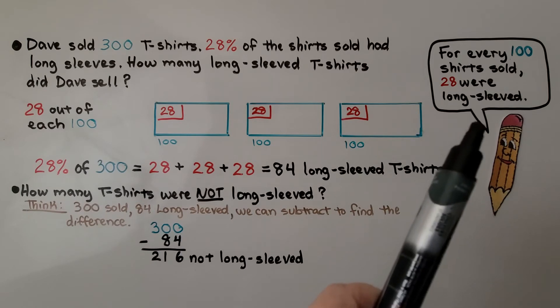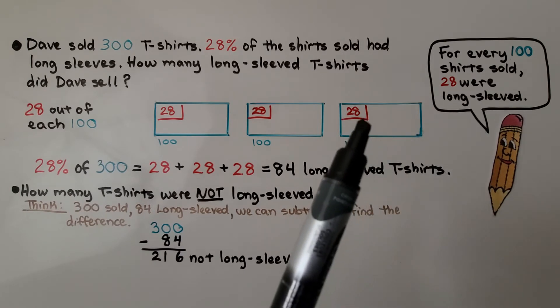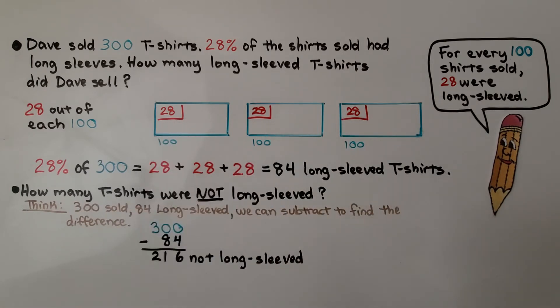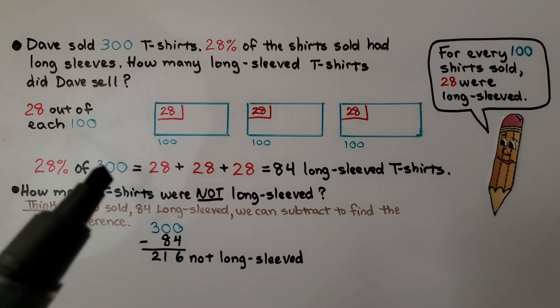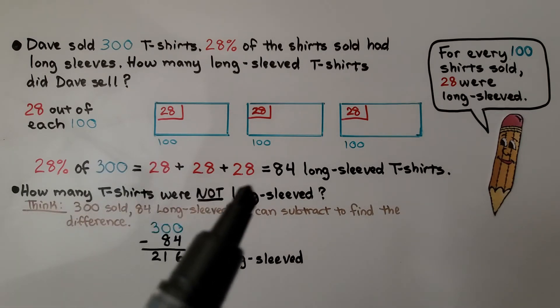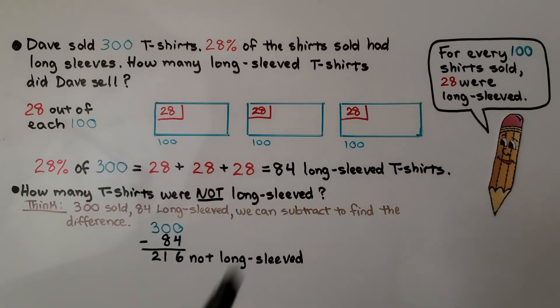For every 100 shirts sold, 28 were long sleeves. 28% of 300 is 28 plus 28 plus 28. That's equal to 84 long sleeved t-shirts.